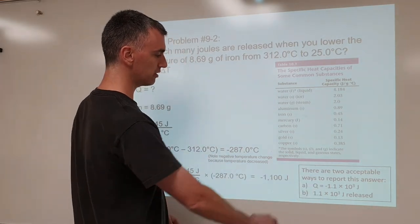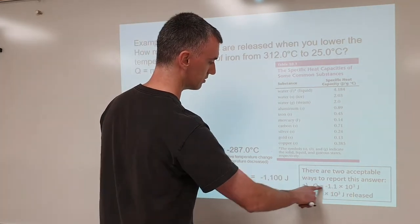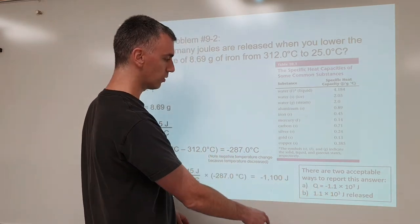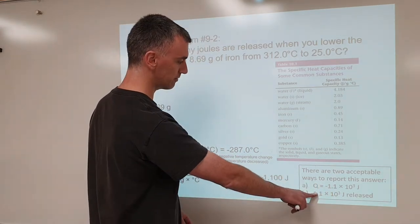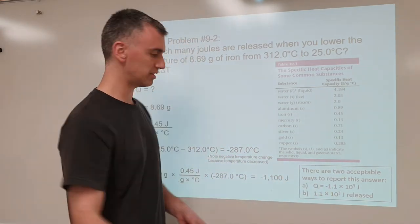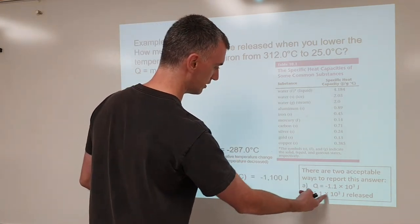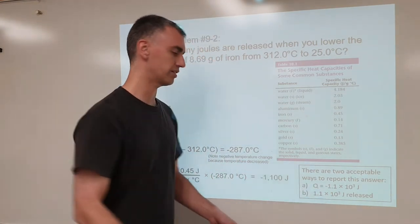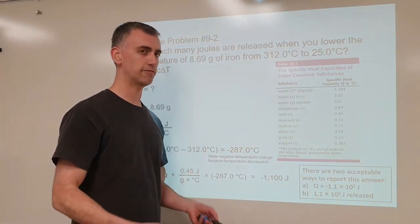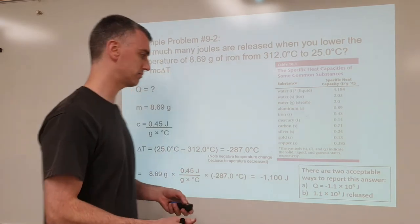You can write Q equals negative 1.1 times 10 to the third joules, or you can use an absolute value because it's the amount that's released. Negative just tells you it's released — or you can just put the word 'released' or 'given off' or some other synonym.